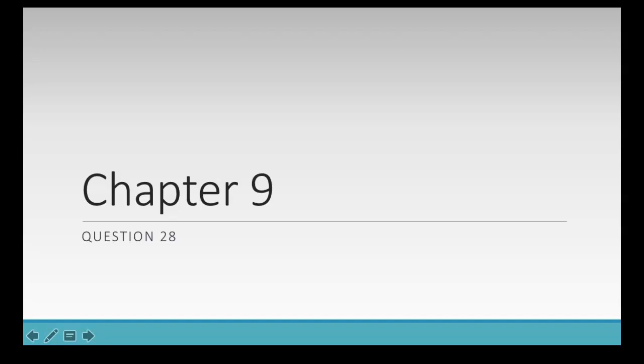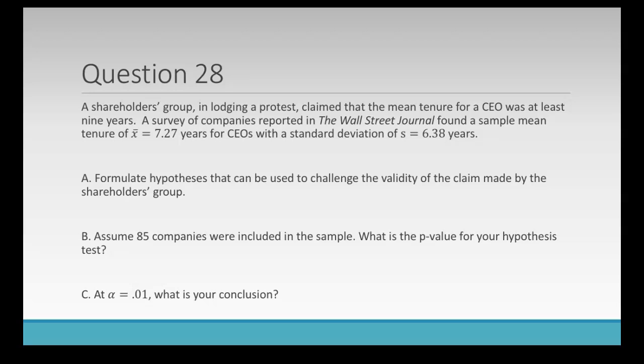Let's work through question 28 from chapter 9. The question says a shareholders group in lodging a protest claimed that the mean tenure for a CEO was at least nine years. A survey of companies reported in the Wall Street Journal found a sample mean tenure of 7.27 years for CEOs with a standard deviation of 6.38 years. So we have three parts to this question. First we need to formulate hypotheses to challenge the claim made by the shareholders group. Then we need to assume that 85 companies were included in that sample and find what our p-value would be. And then come up with our conclusion if alpha equals .01.